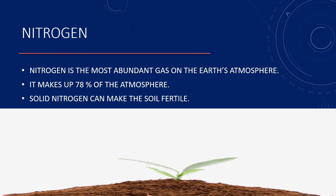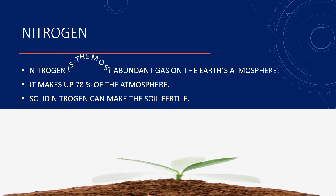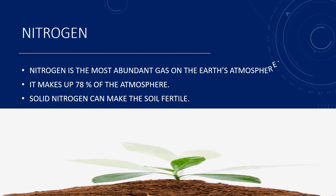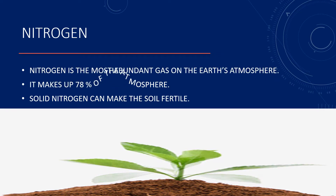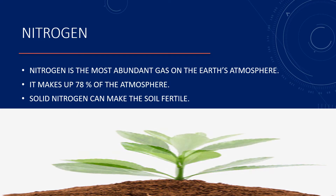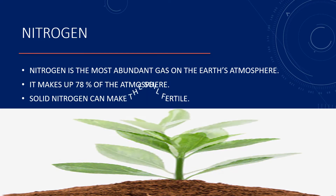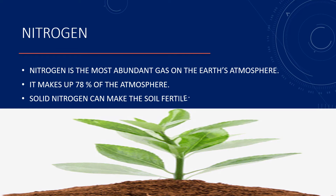Nitrogen is the most abundant gas in the earth's atmosphere. It makes up 78% of the atmosphere. Nitrogen can make the soil fertile.